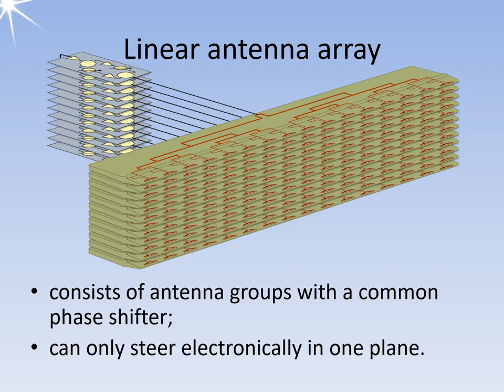However, the antenna still needs to be rotated mechanically at the bearing angle. This type of phased array antenna is still used in many older air surveillance radars.